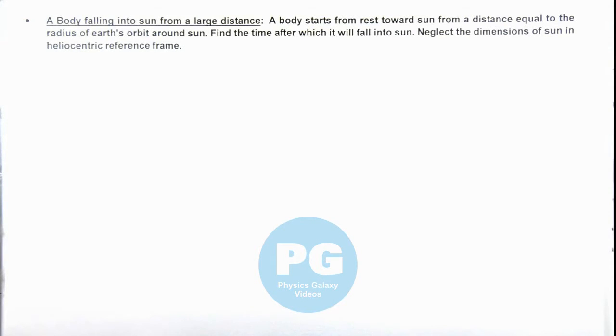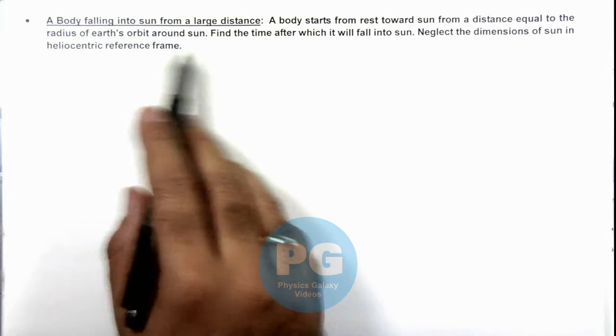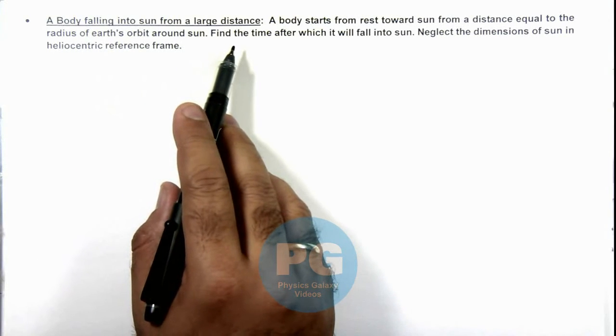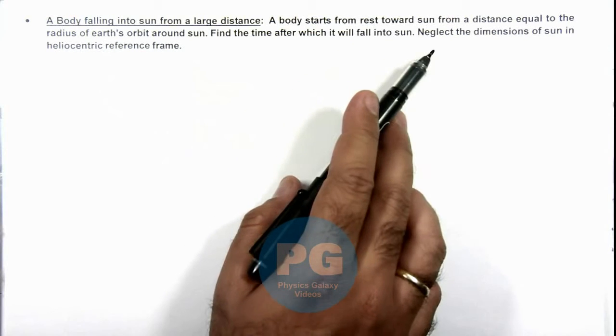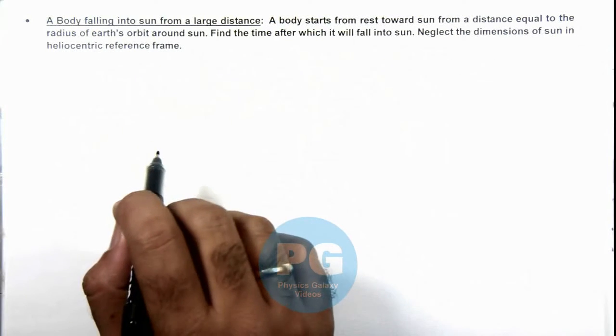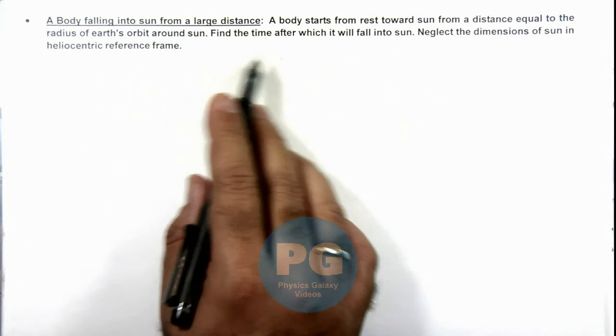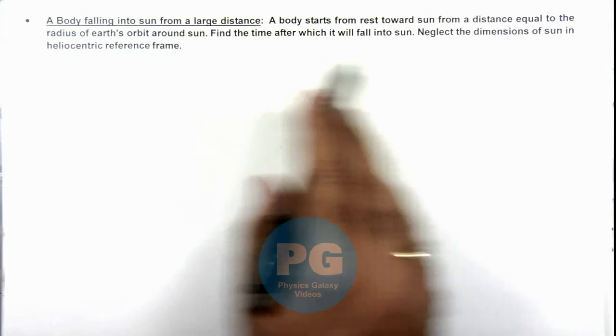This illustration is about a body falling into sun from a large distance. Here we are given that a body starts from rest towards sun from a distance equal to the radius of earth's orbit around sun, and we are required to find the time after which it will fall into sun.